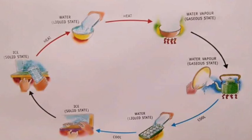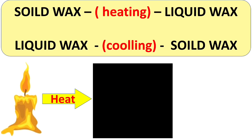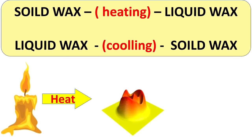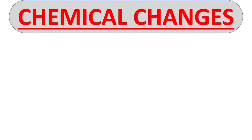Now take an example of a candle. As you can see in the picture, a candle is in the form of solid wax, but when it is heated or lighted it starts melting. This is a temporary change and we can reverse it — the melted wax after cooling becomes solid wax again.